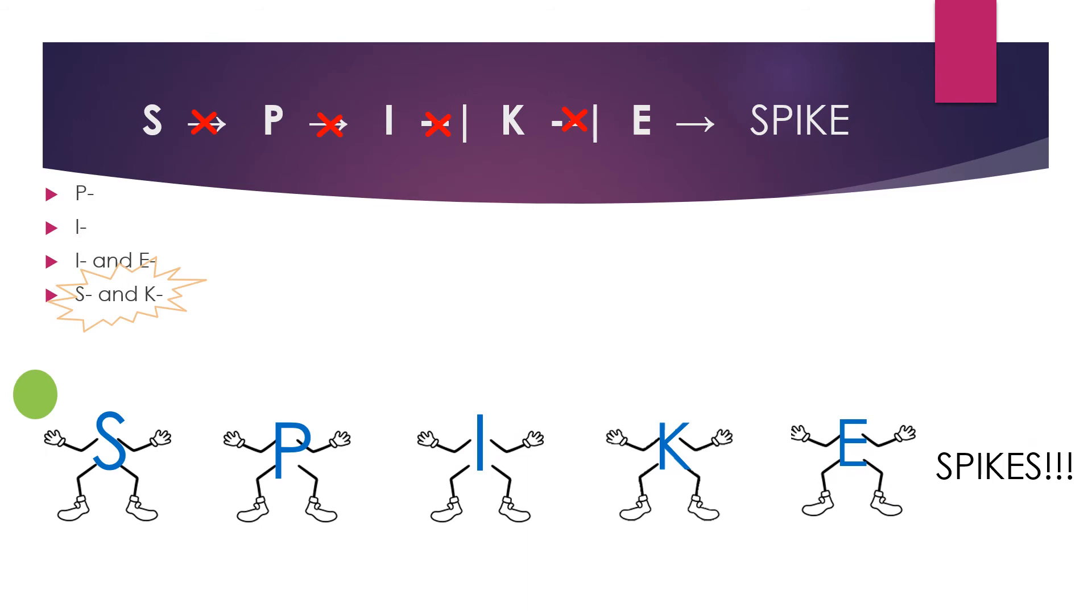For the last pathway, both S and K proteins are mutated. Looking downstream, we can see that K is what blocks E from producing spikes. So at the beginning of the pathway, S is mutated, which prevents the production of P as well as I.